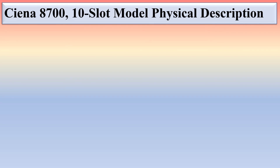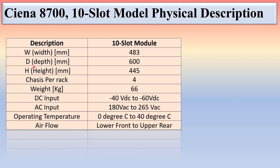The Ciena 8700 10-slot physical specifications: width 483 mm, depth 600 mm, height 445 mm, chassis occupies 4U rack space, weight 66 kg. DC input range is -40V to -60V; AC input range is 180V to 265V. Operating temperature is 0°C to 40°C. Airflow direction is from lower front to upper rear. That covers the Ciena 8700 10-slot module.